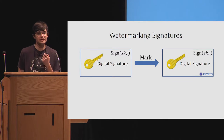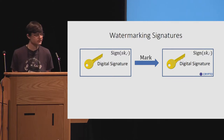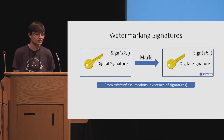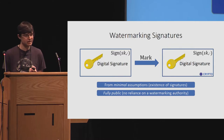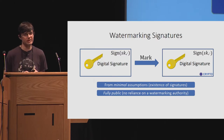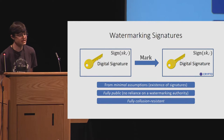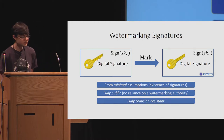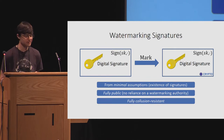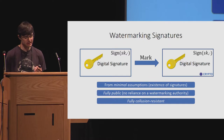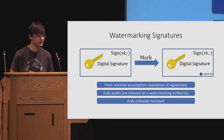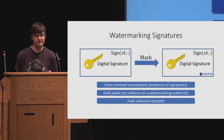Now that I've described how we define watermarking signatures, let me go into the construction. We achieve a watermarkable signature scheme from minimal assumptions — just the existence of signatures. It is a fully public scheme with no reliance on any trusted watermarking authority. All prior PRF constructions required a trusted watermarking authority for either secret marking and/or extraction — this is the first fully public scheme. Moreover, we obtain full collusion resistance, meaning the adversary can see the signing key marked with as many different tags of its choice. All previous constructions — the PRF and IO constructions — were not collusion resistant at all; even if the adversary saw the same signing key marked with two different tags, the scheme would be broken. So we've gone from basically no collusion resistance to full collusion resistance.